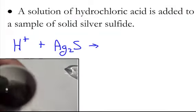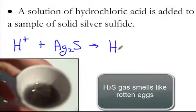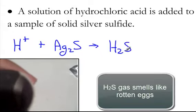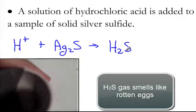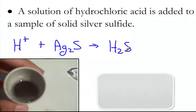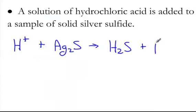And what we're going to get as a result is H2S, which is hydrogen sulfide gas. And that gas is a colorless, poisonous, foul, rotten egg-smelling gas. And we're also going to get silver, but silver will be aqueous, so we need to make sure we put a charge on that.